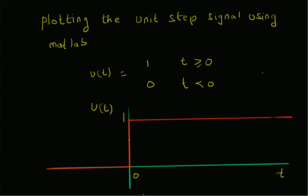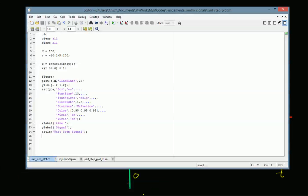We are going to learn how to plot this function using MATLAB. Let us move on to MATLAB. This is the MATLAB script or code for plotting the unit step signal.